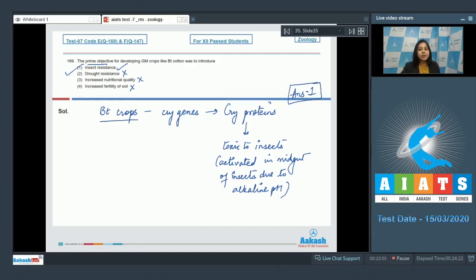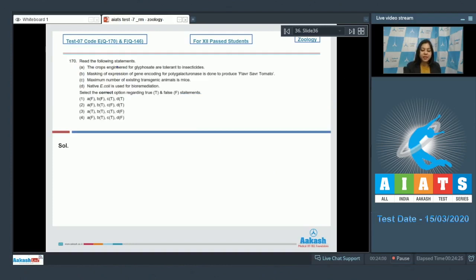Moving on to the next question, question number 170. Read the following statements. Statement one: crops engineered for glyphosate are tolerant to insecticides. This is an incorrect statement, so this is false, as crops engineered for glyphosate resistance are tolerant to herbicides and not insecticides.